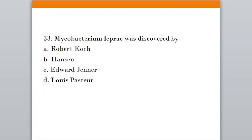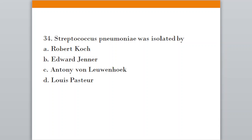Question number thirty-three: Mycobacterium leprae was discovered by. Option A, Robert Koch; Option B, Hansen; Option C, Edward Jenner; Option D, Louis Pasteur. The correct answer is option B, Hansen. Question thirty-four: Streptococcus pneumoniae was isolated by. Option A, Robert Koch; Option B, Edward Jenner; Option C, Anthony von Leeuwenhoek; Option D, Louis Pasteur. The correct answer is option D, Louis Pasteur.